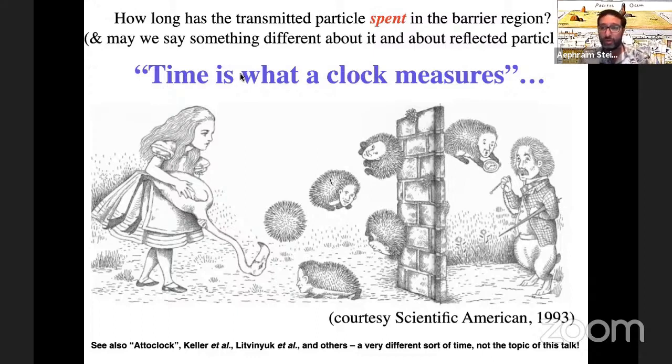And the picture that we had, redrawn much better by the artist of Scientific American, is if only these particles could hold on to their own stopwatches and press the start button only while they were in the barrier, and then press the stop button when they got out, we could read off how much time they were in the barrier. And that's very different from just asking, what's the most likely time to see a particle get out if it gets out? It's a completely different quantity.